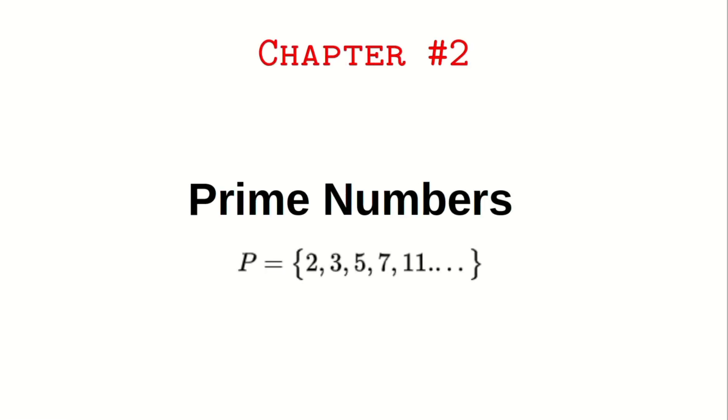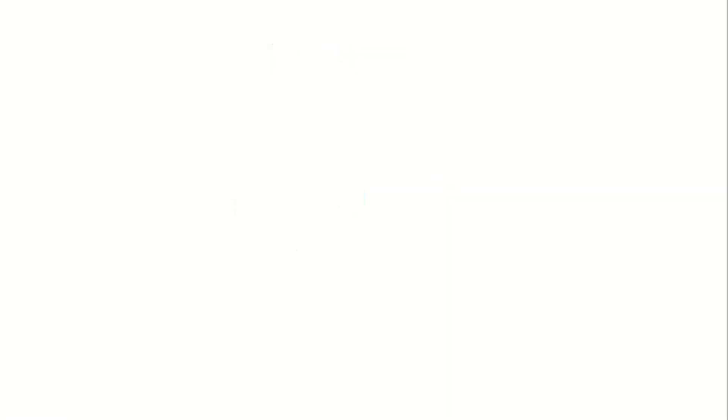Chapter number one, what are prime numbers? Before we dive into the formula, let's quickly review what prime numbers are. A prime number is a natural number greater than one that has exactly two divisors, one and itself.